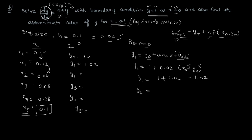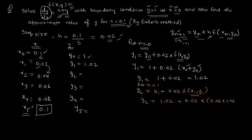For y₂, put n=1: y₂ = y₁ + h·f(x₁, y₁). So y₂ = 1.02 + 0.02·(x₁ + y₁) = 1.02 + 0.02·(0.02 + 1.02). Solving this you get y₂ = 1.0408.